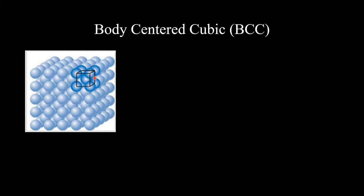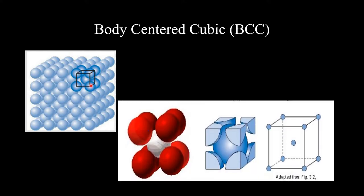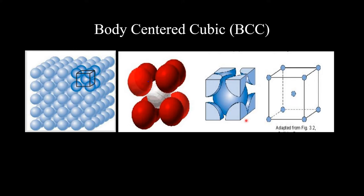Here is a body-centered cubic structure. In the body-centered cubic structure, you can see that atoms are on the corners and at the same time an atom is placed in the body of the unit cell. If you look at only one unit cell, you can see the atoms on the corners and the atom placed in the body.